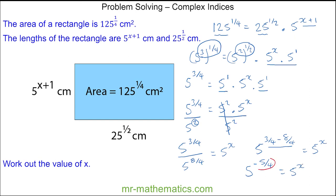So we can see that x is equal to negative 5 over 4.